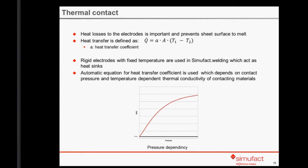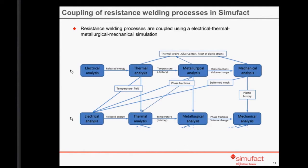The last thing to discuss is the coupling of the single analyses in SimuFact Welding. First, we perform an electrical analysis to calculate the released heat due to joule heating. These results are applied as a boundary condition for the second analysis — the thermal analysis — where we calculate the temperature field, thermal strains, and activate glue contact and plastic strains if necessary. Afterwards, we calculate phase fraction, volume change and other parameters in the metallurgical analysis. Finally, mechanical stresses and strains are calculated in the mechanical analysis. Every result field is transferred into the following time step.